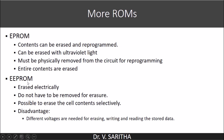EEPROM — electrically erasable programmable ROM. Erasing is done electrically and the chip does not have to be physically removed for erasure. In the case of EPROM, we saw that the chip needs to be physically removed to reprogram it, but in the case of EEPROM we need not remove it physically. Also, unlike EPROM where all contents need to be erased, in EEPROM selected cells can be erased and reprogrammed. The disadvantage is that different voltages are needed for erasing, writing, and reading the stored data.